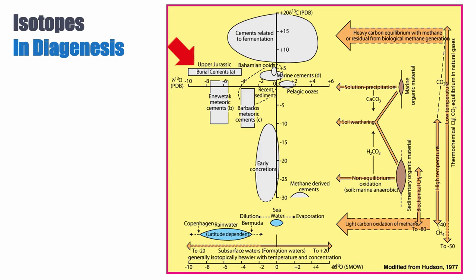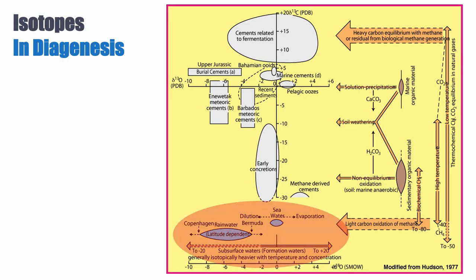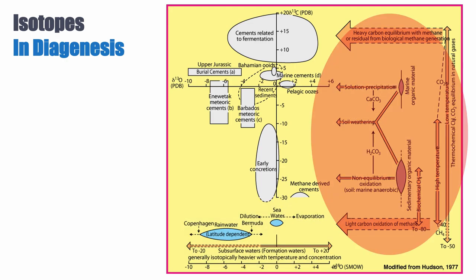Burial cements are negative not because the waters were very negative, but because temperatures were very high — maybe 100 to 120 degrees — which shifts the delta O18 of the calcite towards more negative values. So this is a complex diagram showing both the delta O18 origin of the different waters and the carbon isotope sources that could contribute to these values.